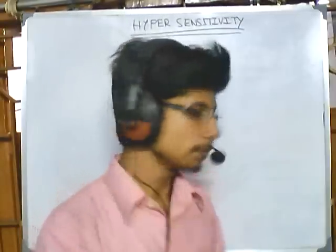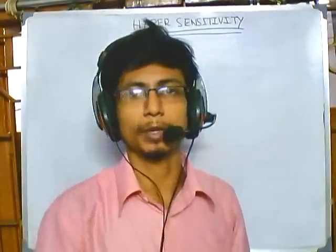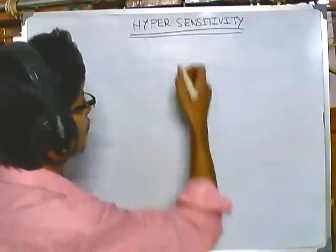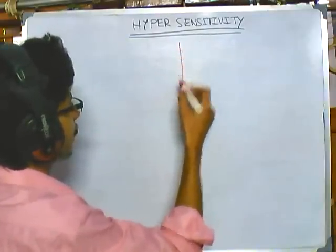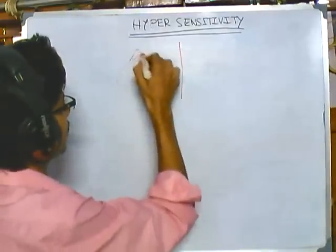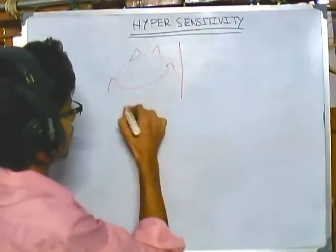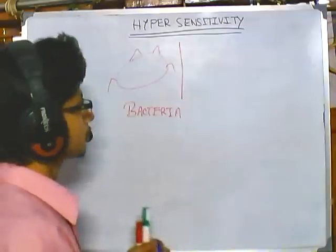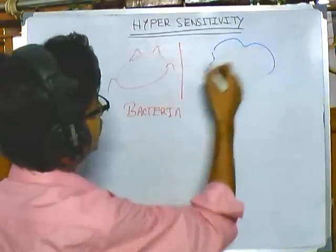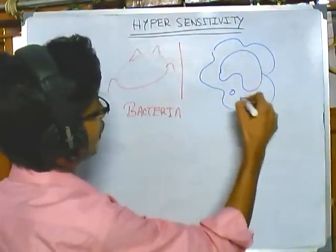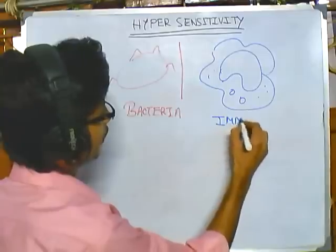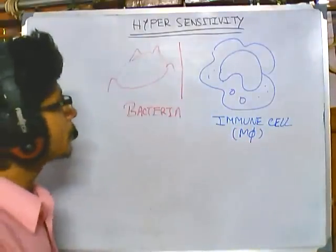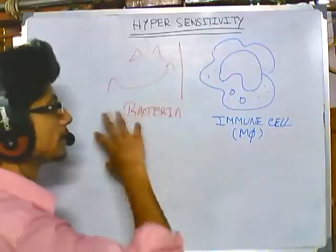The immune system represents a combat between pathogens trying to enter our body and the cells of our immune system — essentially a war going on all the time. On one side we have a pathogen, for example a bacterium which has antigens all around it. On the other side we have our own immune cells — for example, a macrophage.